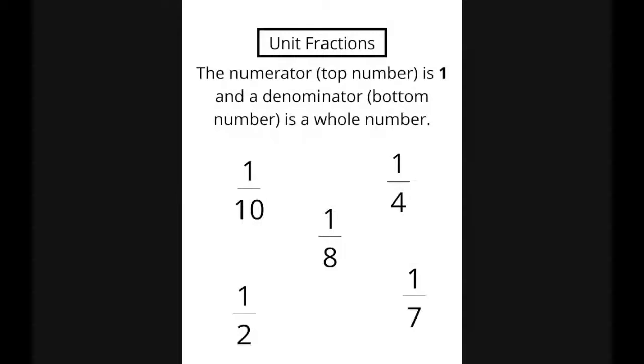Unit fractions. The numerator, the top number, is one and a denominator, the bottom number, is a whole number. So these are all examples of unit fractions because the numerator is always one.